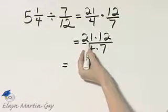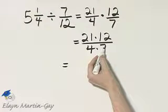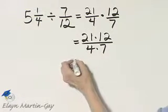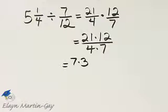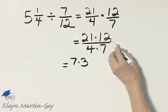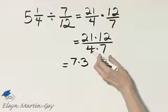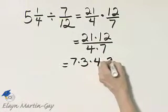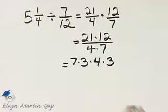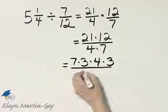Or if you'd like, I notice 21 and 7 have a common factor of 7. I will write 21 as 7 times 3, coincidentally a prime factorization. 12 and 4 have a common factor of 4. So I'll write 12 as 4 times 3. Not the prime factorization, but this will certainly get us where we need to be.